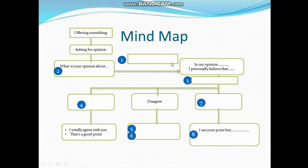In this initial step, we start with the concept map, covering the concept of the expressions asking for opinion and giving opinion. Our task is to complete the empty map with the answers provided. In the map image we can see the answer clue, namely 'in my opinion,' and the right answer to fill in question number 1 is 'giving opinion' because the expression has a correlation with 'in my opinion.'